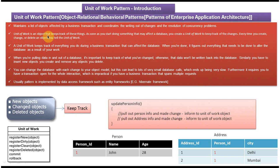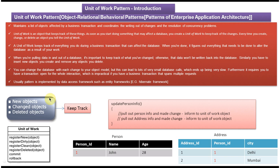The unit of work is an object that keeps track of changes. As soon as you start doing something that may affect the database, you create a unit of work to keep track of these changes. Every time you create, change, or delete an object, you tell the unit of work. So every time some changes happen to the object which we are going to save in the database, we just inform the unit of work and the unit of work will take care of saving or deleting that information in the database.